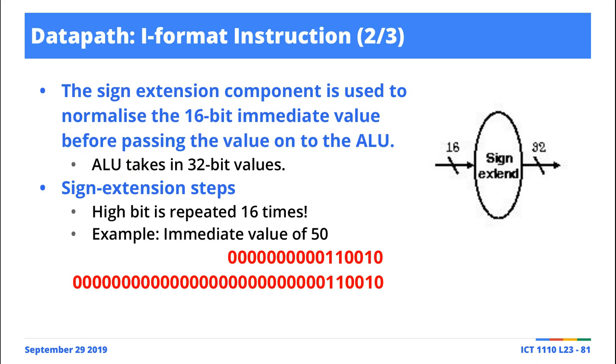Turns out it's quite simple. The sign extension takes in as input a 16-bit value and converts it into a 32-bit equivalent value. It gets the 16-bit representation of the immediate value and pads that value with 16 bits that are equivalent to the most significant bit.